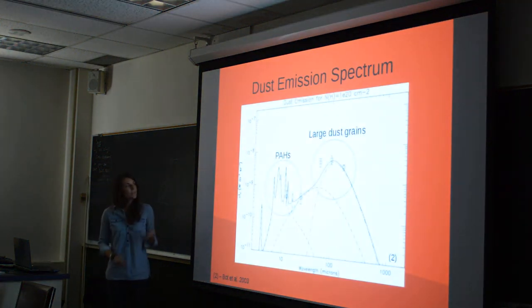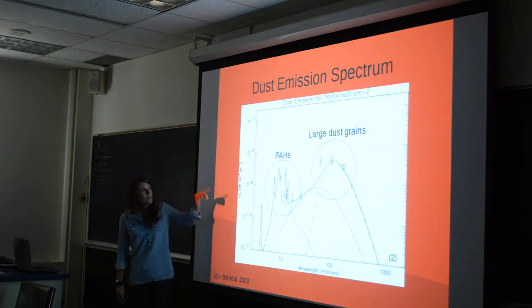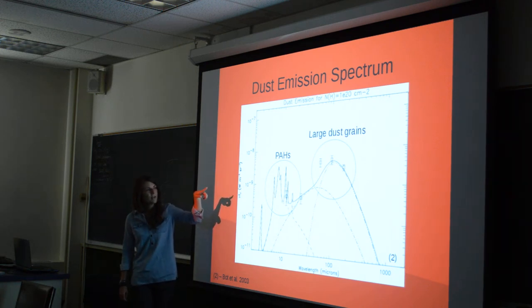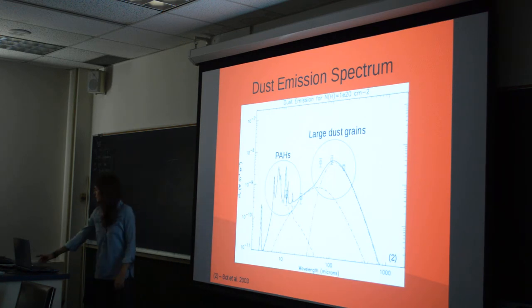This is the dust emission spectrum. We're focusing on the 12-micron peak, which is emitted by the smaller dust grains, and the 100-micron peak, which is emitted by the larger, colder dust grains.